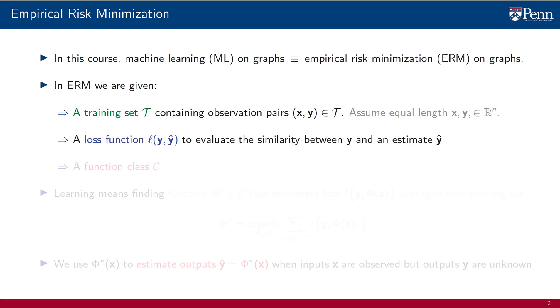The second element is a loss function L(y, ŷ) that evaluates the similarity between output y and an estimate ŷ of such output. The third element, which is arguably the most important, is a function class C.